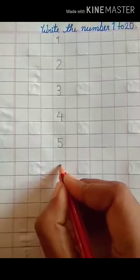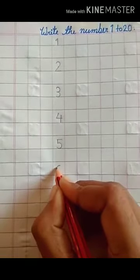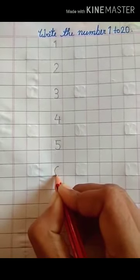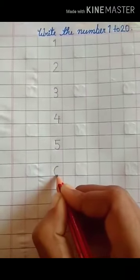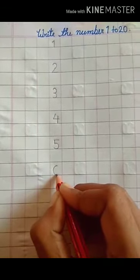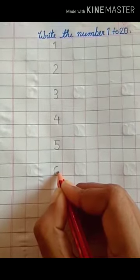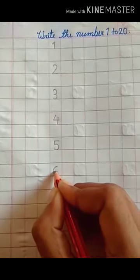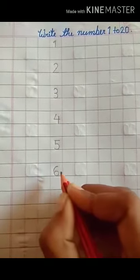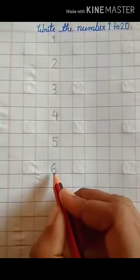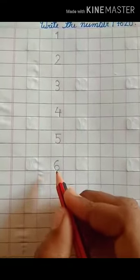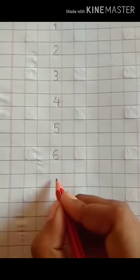Draw left curve, then make a circle. This is number 6.